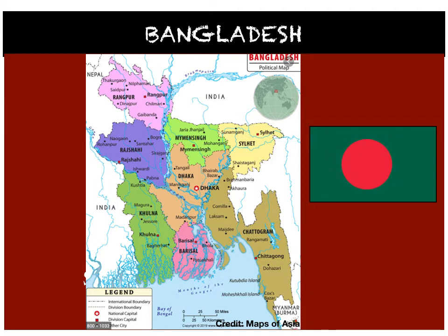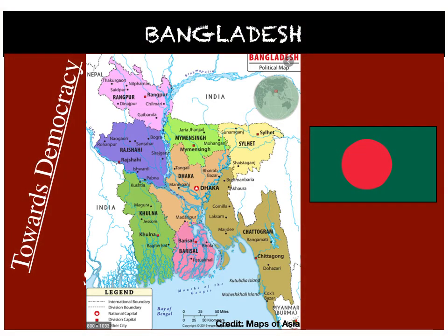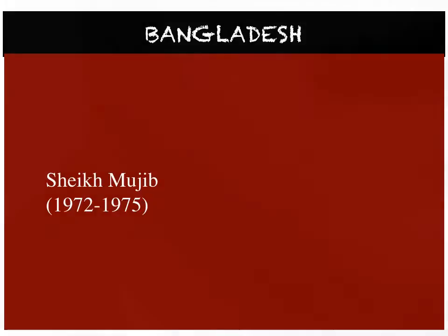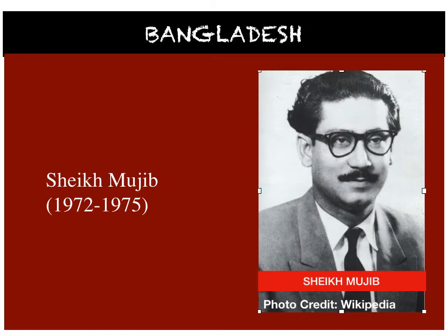Sheikh Mujib was released and became the first president of Bangladesh. The Constitution of Bangladesh was drafted in 1974. Sheikh Mujib ruled Bangladesh from 1972 to 1975. Surprisingly, he amended the constitution from a parliamentary to a presidential form of government, and he also abolished all political parties except his own party, Awami League.